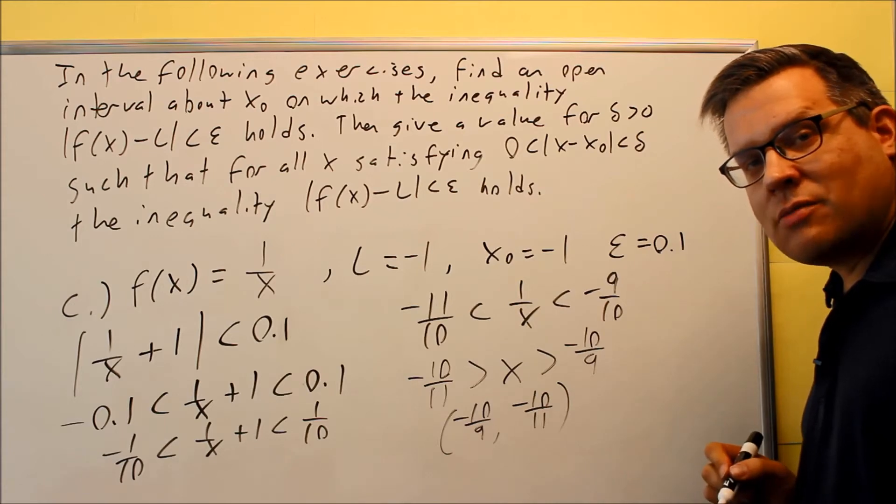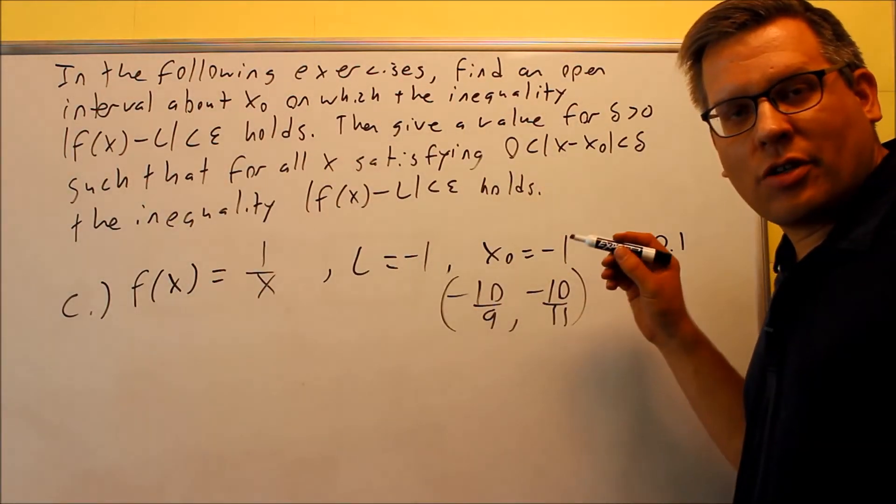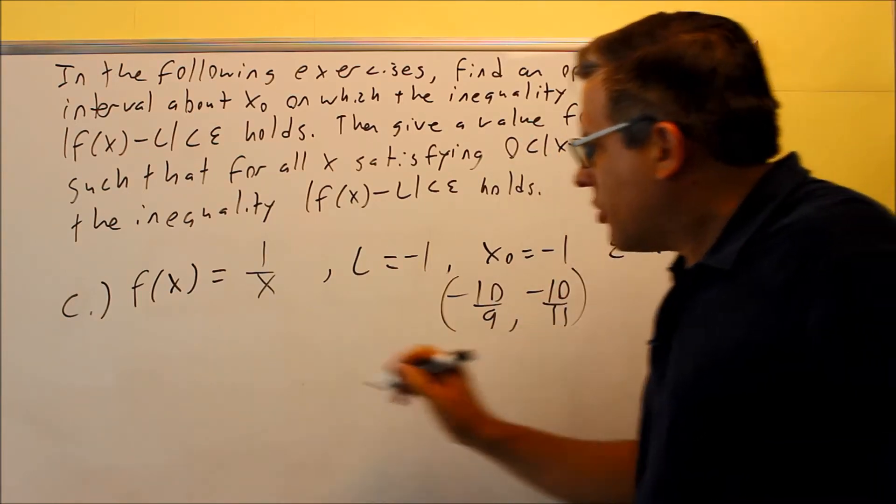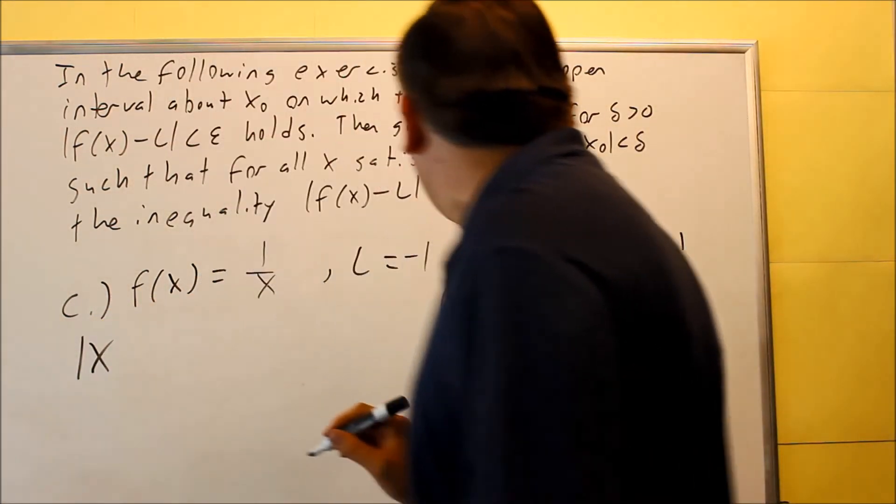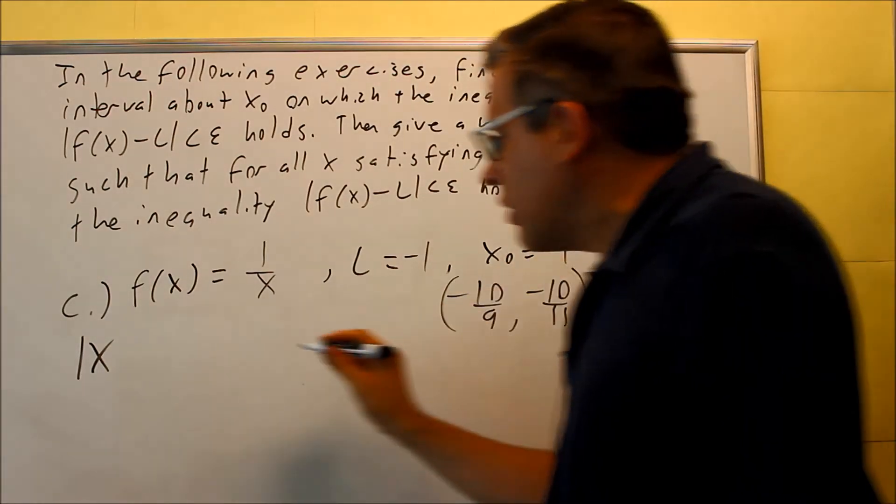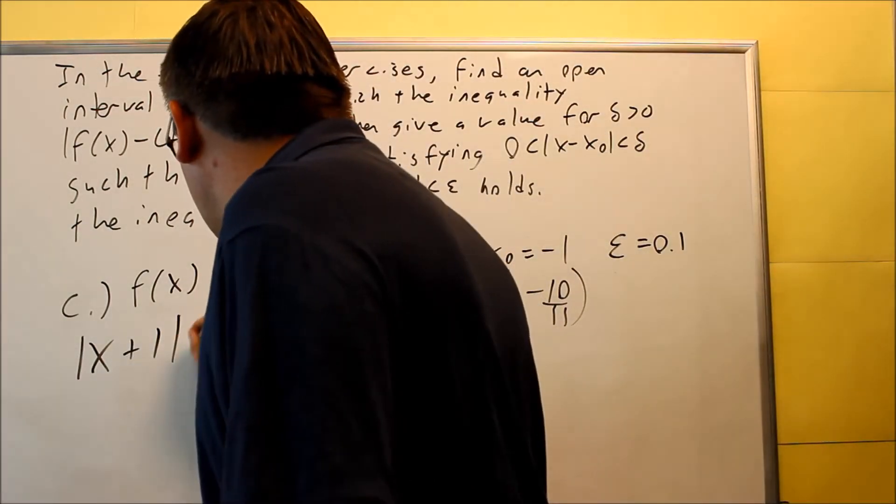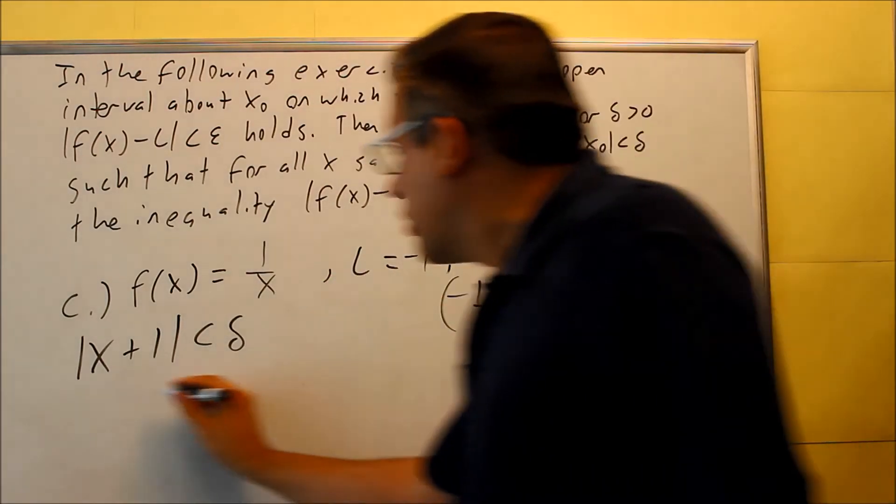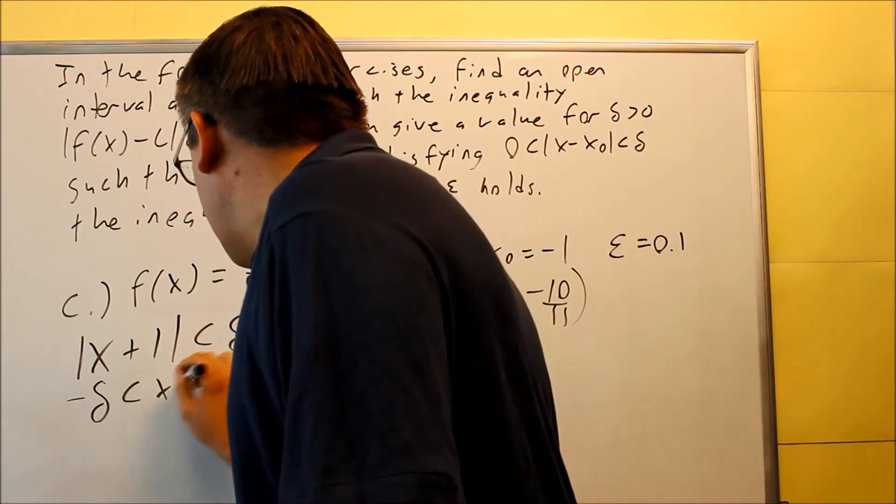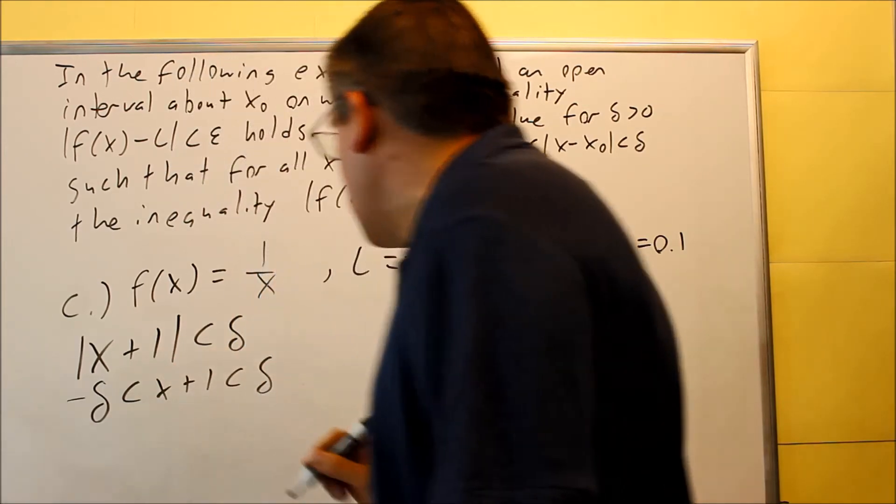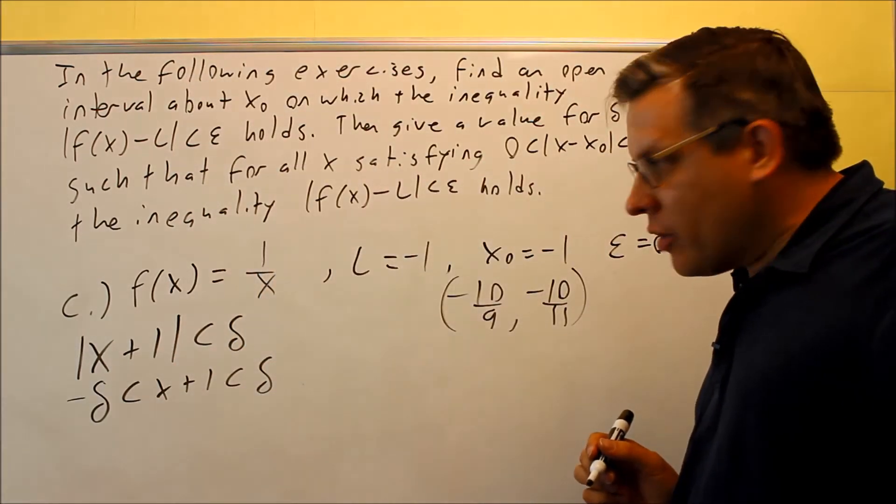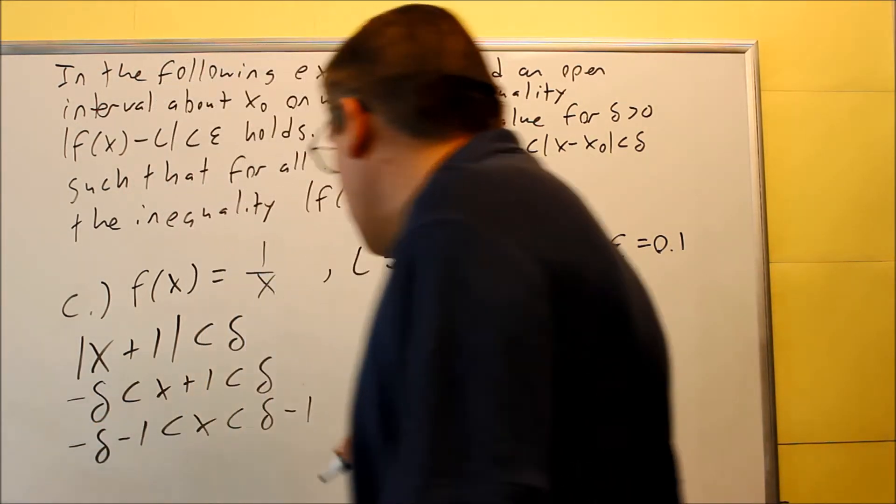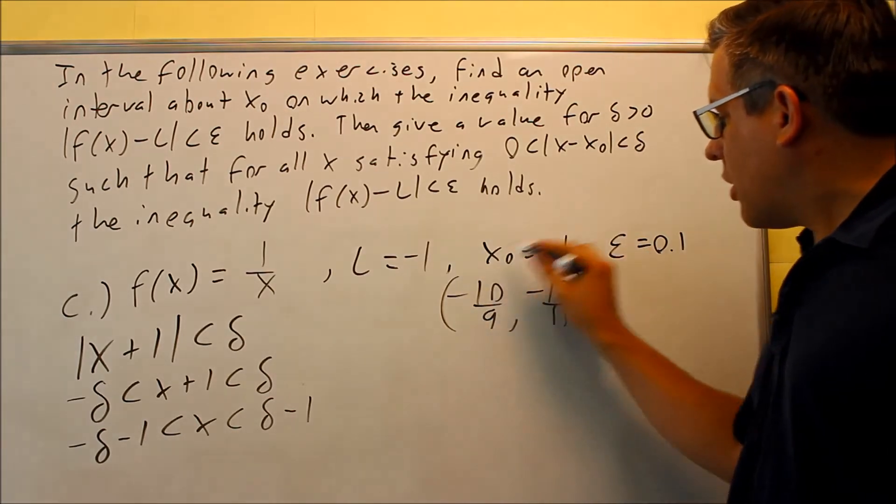So now let's find the delta. We first will set this inequality up. We're going to do x minus x₀, but the two negatives will give you a plus, less than delta. We're going to turn that into an inequality like we did before. Negative delta minus 1 less than x plus 1 less than delta. You're going to subtract 1 from all the sides. Delta minus 1, delta minus 1 there.